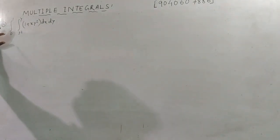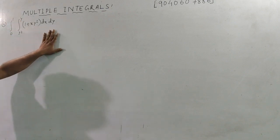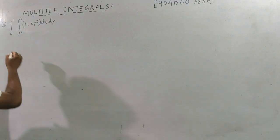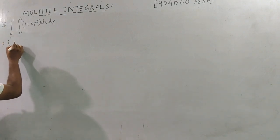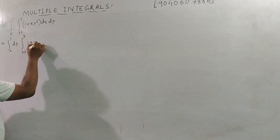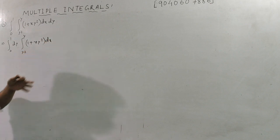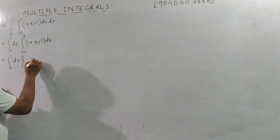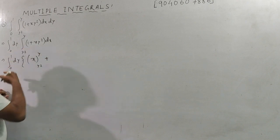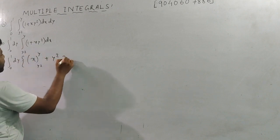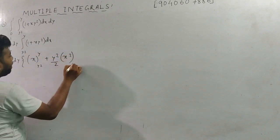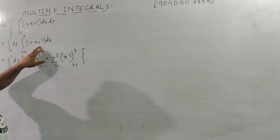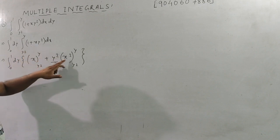Next example: evaluate ∫₀¹ ∫_{y²}^{y} (y² + xy²) dx dy. First take the y limit, then no need for anything else — from 0 to 1 dy side. Integrate from y² to y of (y² + xy²) dx. When y remains, x will remain as variable.